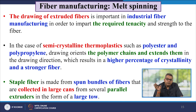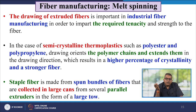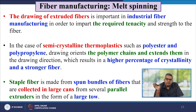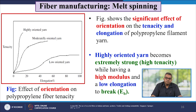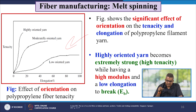The drawing of extruded fibres is an important industrial process to impart the required tenacity and strength. In the case of semi-crystalline thermoplastics such as polyester and polypropylene, drawing orients the polymer chain and extends them in the drawing direction, resulting in high crystallinity and strong fibre. The highly oriented yarn becomes extremely strong — high tenacity — while having high modulus and low elongation to break, sometimes referred to as EB.